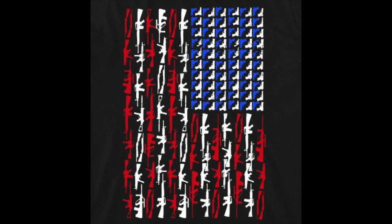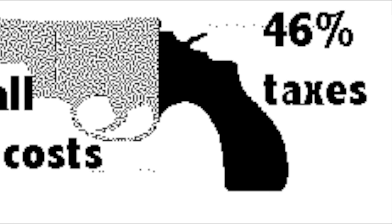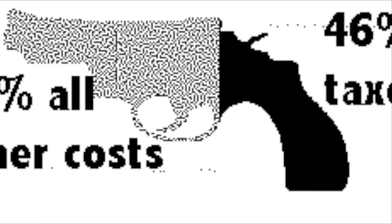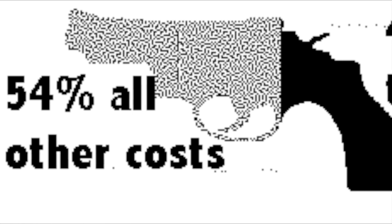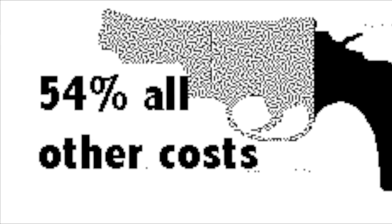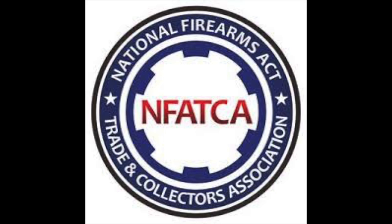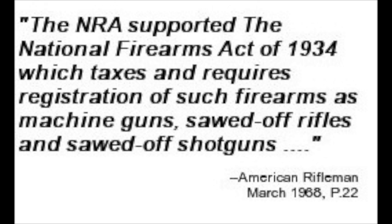The first federal gun control laws didn't happen until 1934. This law puts a tax on the manufacture and sale of machine guns of $200. In 1938, Roosevelt won approval of the National Firearms Act, which requires the licensing of gun dealers. These gun dealers must record their sales. The gun control laws were first created in the South.